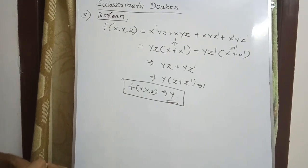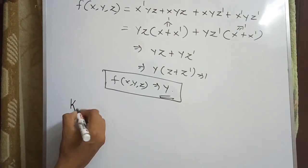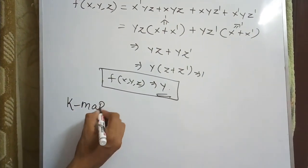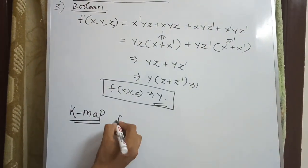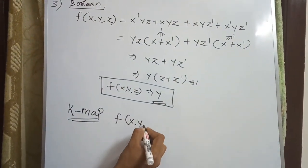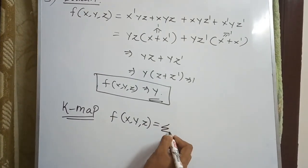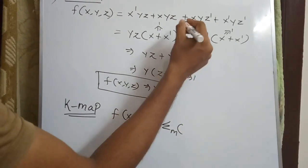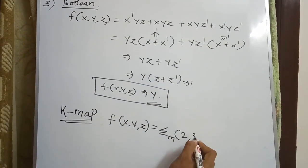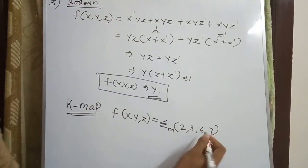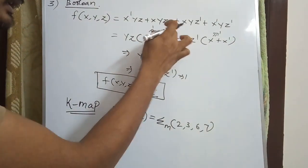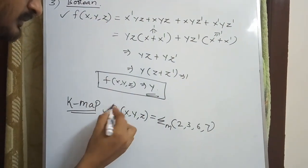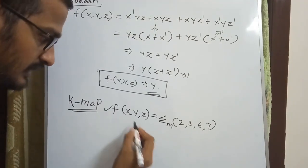The K-map equation uses summation of minterms 2, 3, 6, 7. Let's solve using K-map. It's a three-variable K-map.